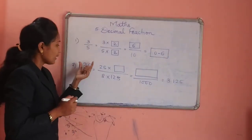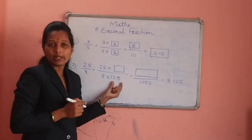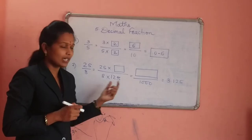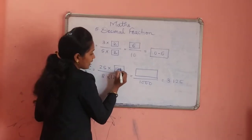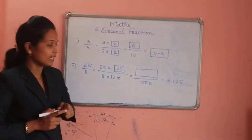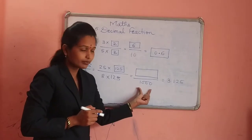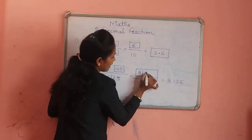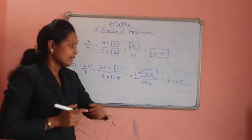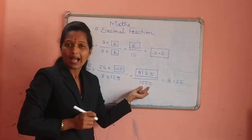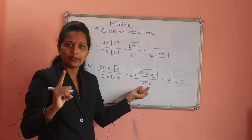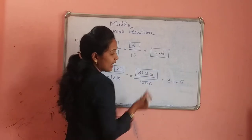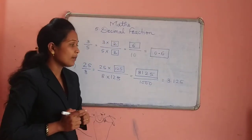By the same way, for 25 divided by 8: 8 multiplied by 125 gives 1000. So if we multiply the denominator by 125, we also multiply the numerator by 125. 125 multiplied by 25 gives 3125, so we have 3125 divided by 1000. In front of 1 there are three zeros, so we remove 3 places and give the decimal point: 3.125.